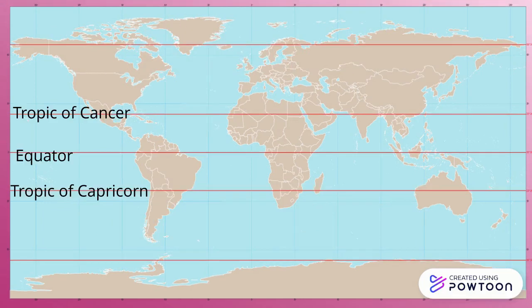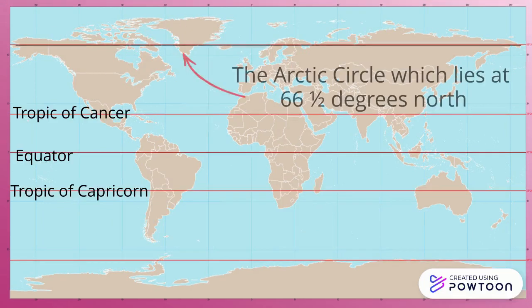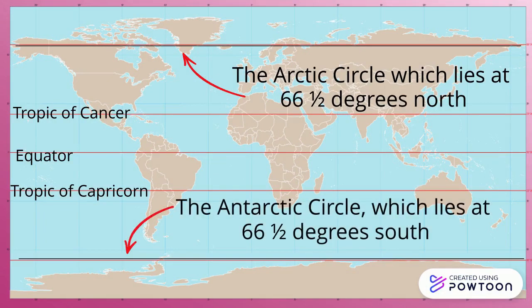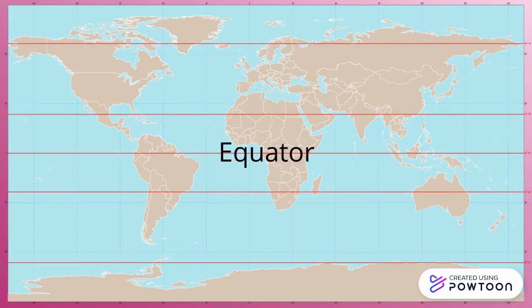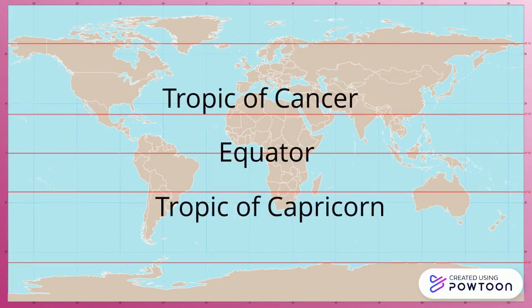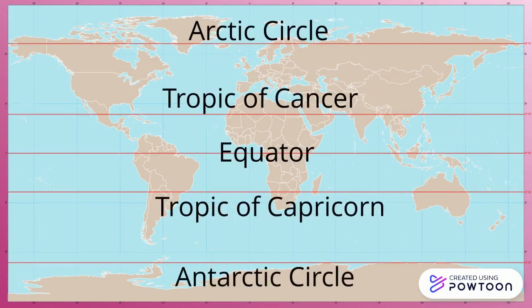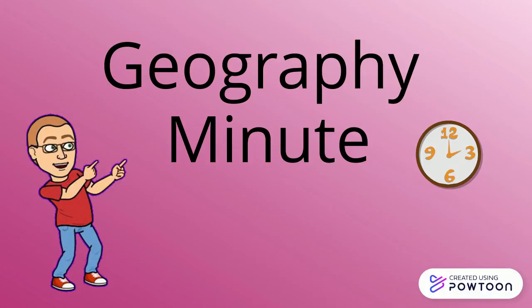Then we have the circles: the Arctic Circle, which lies at 66.5 degrees north, and the Antarctic Circle, which lies at 66.5 degrees south. So if you only remember these five lines of latitude, I think you've done a good thing. I hope this helps, because that's your Geography Minute.